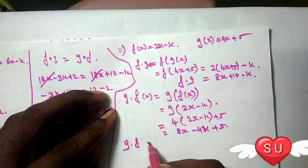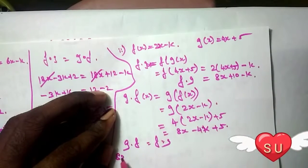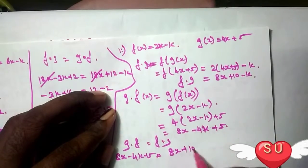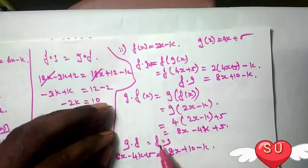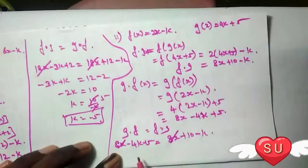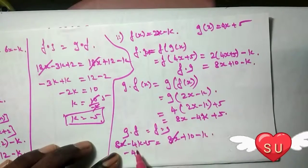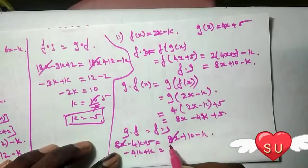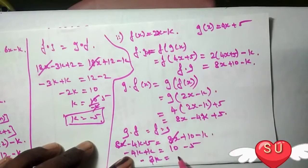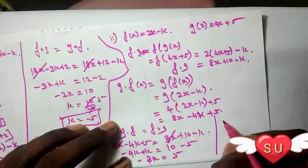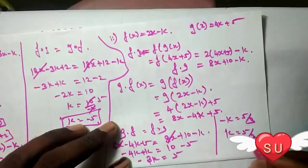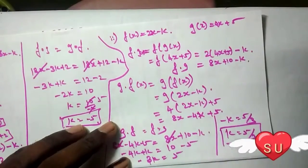g∘f equals f∘g. So, 8x minus 4k plus 5 equals 8x plus 10 minus k. The 8x terms cancel. So, minus 4k plus k equals 10 minus 5, giving minus 3k equals 5. Therefore, k equals minus 5 divided by 3. This is the answer. Friends, this sum is very easy — here we apply the composition method. Here's the k value.